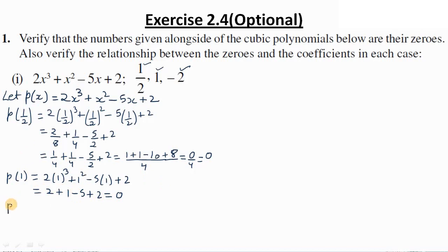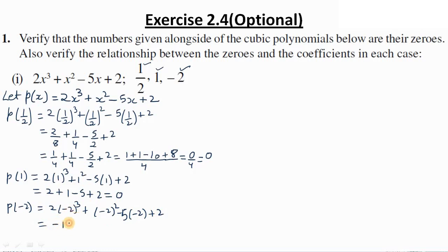Now the last value: p(-2). Substituting x = -2: 2×(-2)³ + (-2)² - 5×(-2) + 2. (-2)³ = -8, so -8×2 = -16. (-2)² = 4, plus 10, plus 2. Simplifying: 2 + 10 = 12, 12 + 4 = 16, and 16 - 16 = 0. So p(-2) = 0 as well.